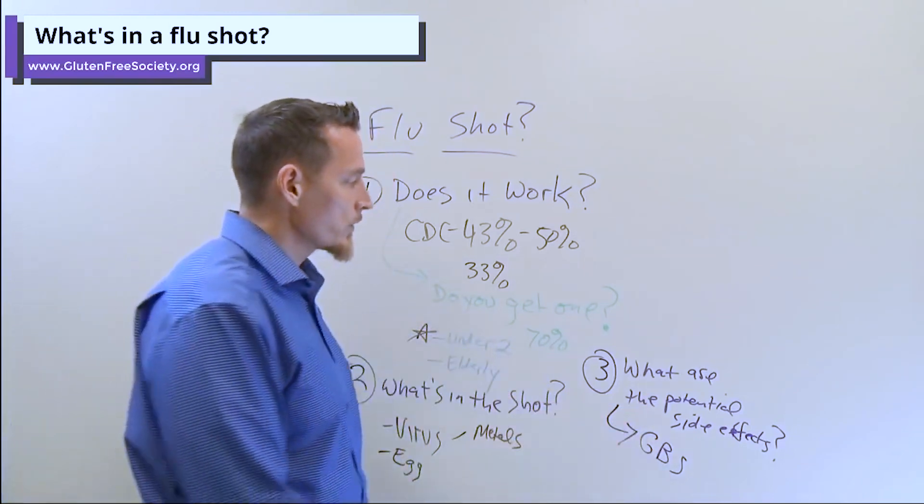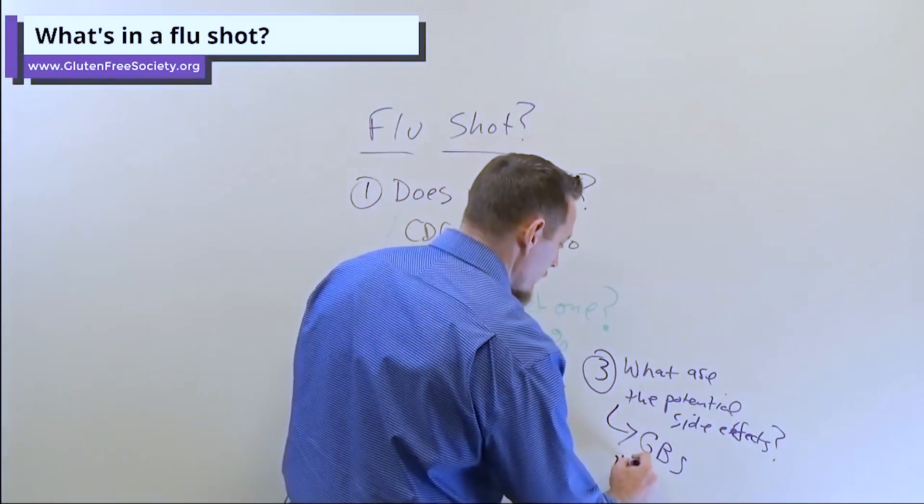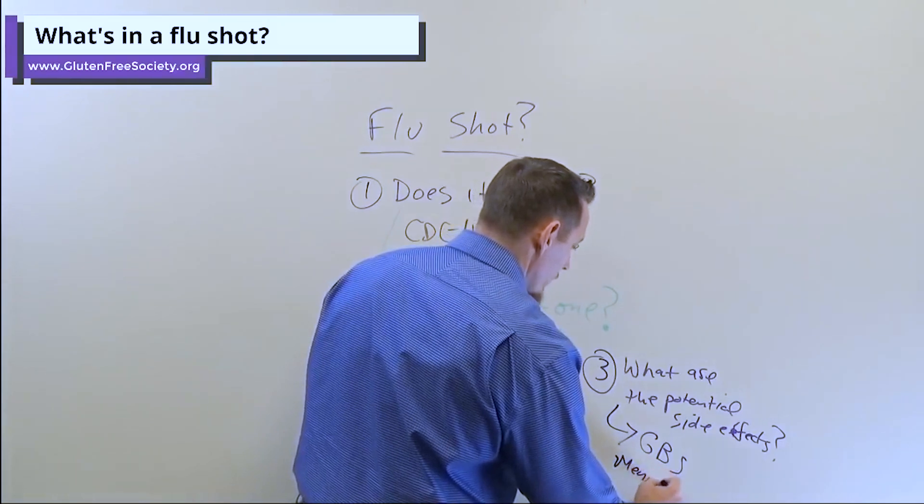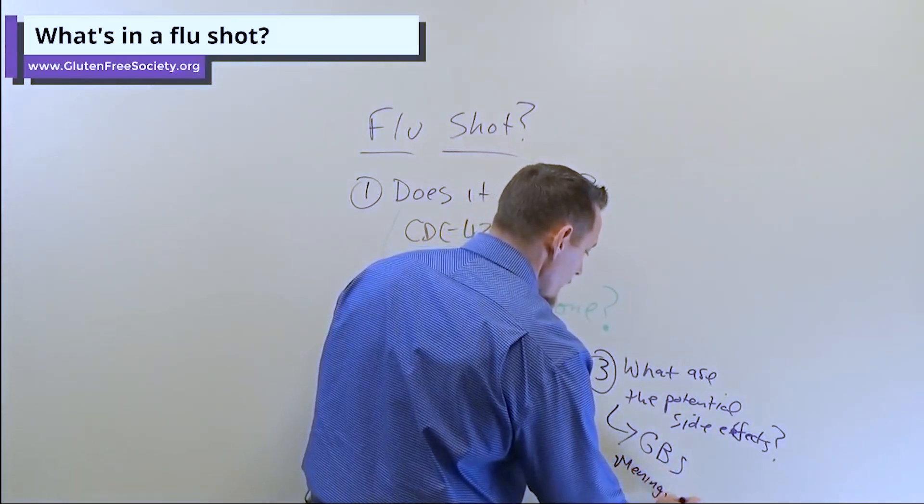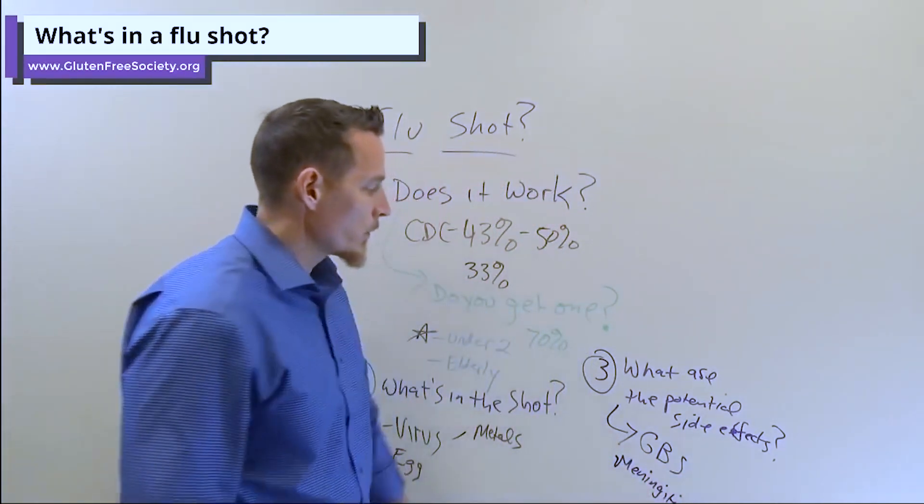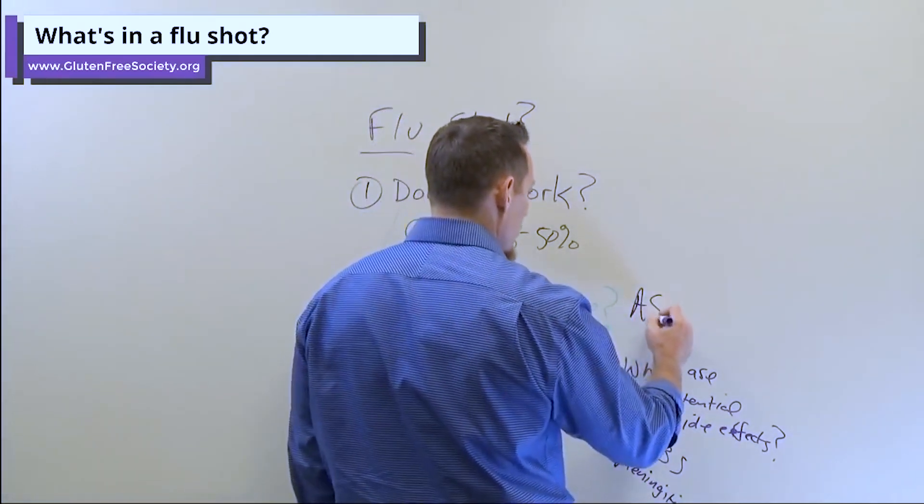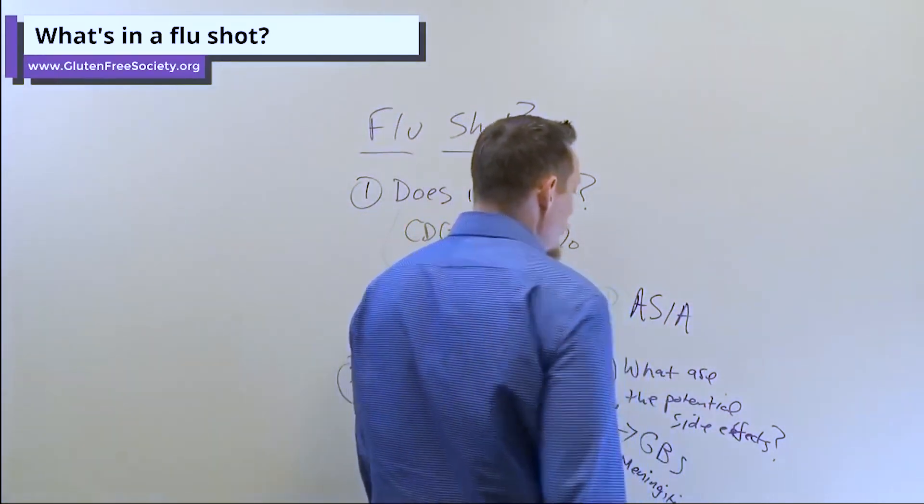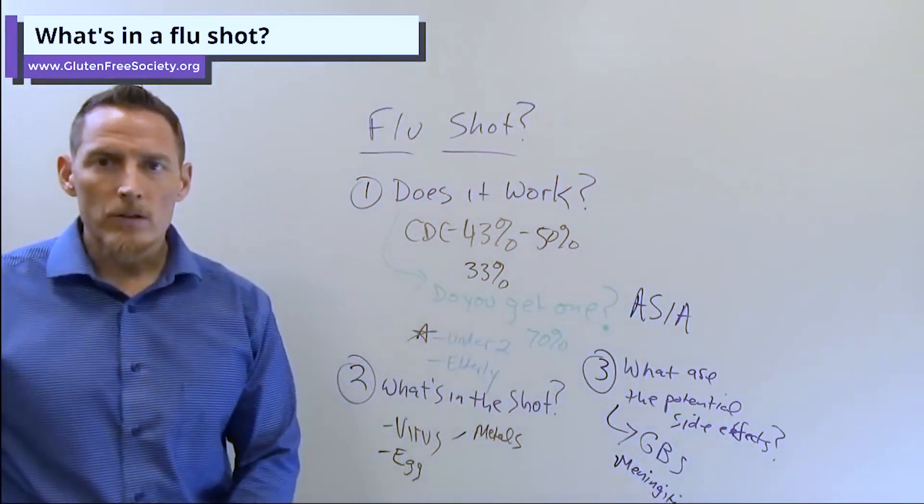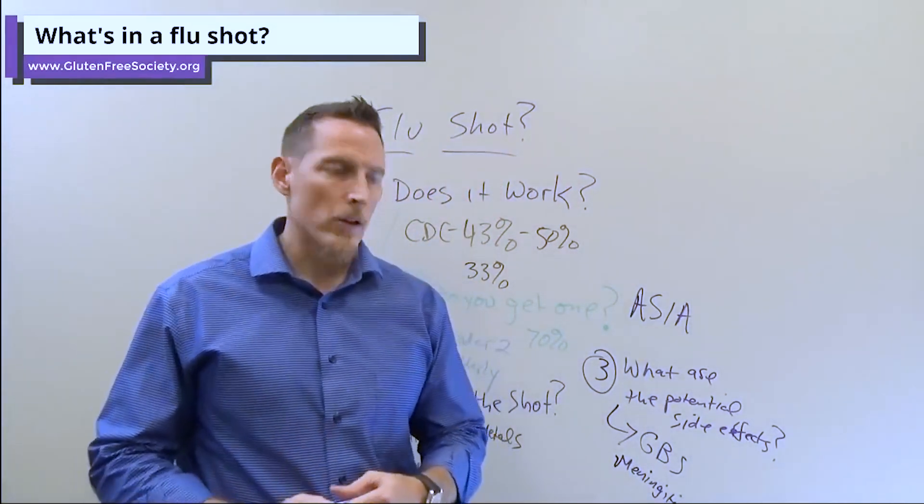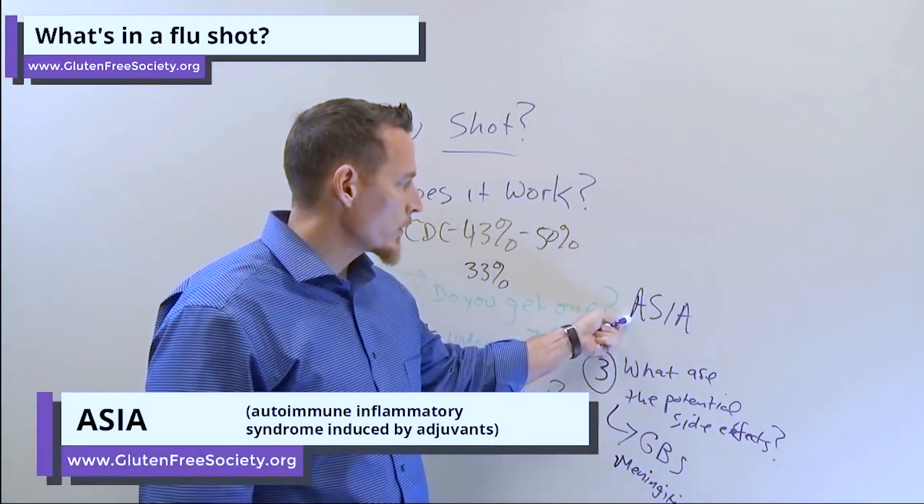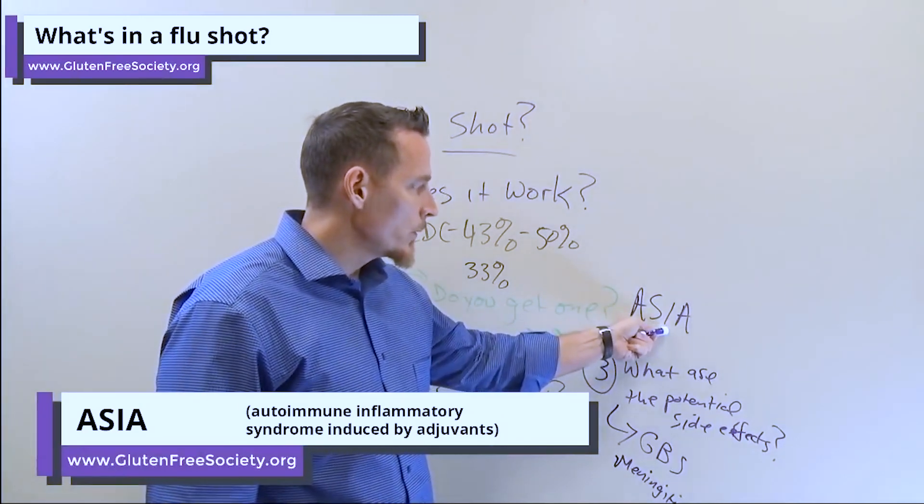Some of the other risks involved with getting a flu shot: meningitis, so it can create a swelling or inflammation of the brain. Another one of the risks is something called ASIA.